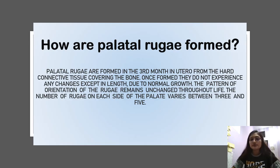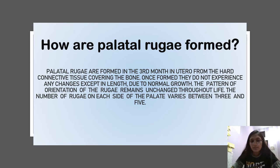The study of palatal rugae is known as palatoscopy or palatal rugoscopy. Palatal rugae are formed in the third month in utero from the connective tissue covering the bone. Once formed, they do not experience any changes except in length due to normal growth. The pattern and orientation of the rugae remains unchanged throughout life — this is their most important property. The number of rugae on each side of the palate varies between 3 and 5.